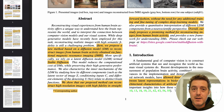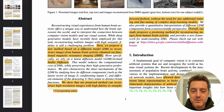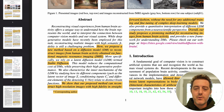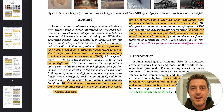Here they propose a new method based on a diffusion model (DM) to reconstruct images from human brain activity obtained via functional magnetic resonance imaging (fMRI). More specifically, they rely on a latent diffusion model termed Stable Diffusion, created by Stability.ai. They show this method can reconstruct high-resolution images with high fidelity without the need for any additional training and fine-tuning of complex deep learning models. Overall, the study proposes a promising method for reconstructing images from human brain activity.